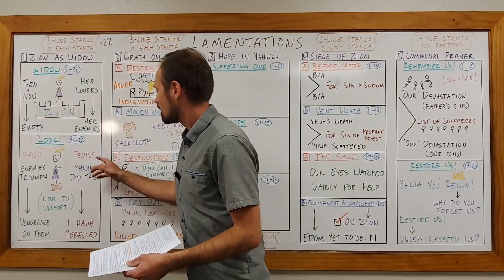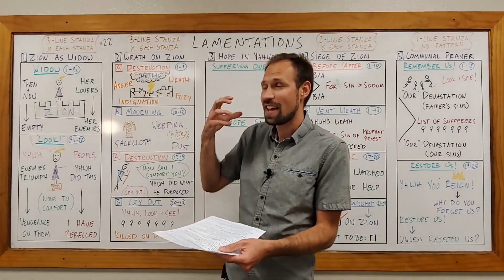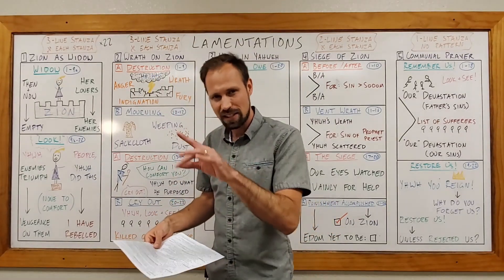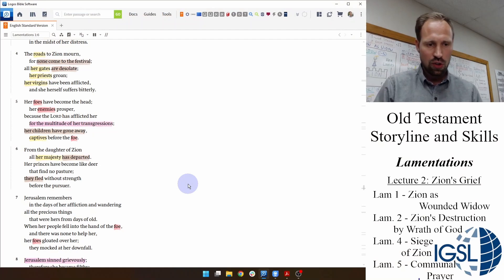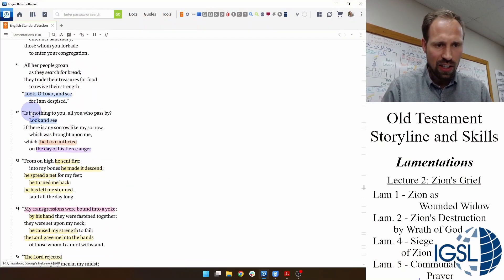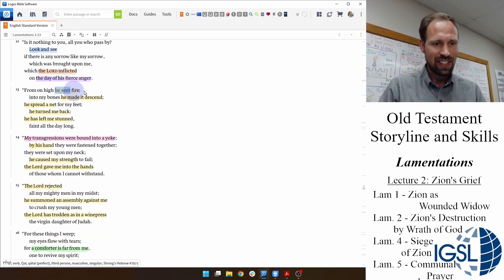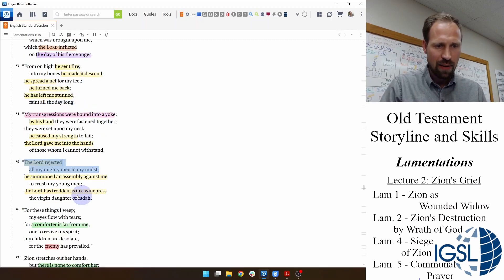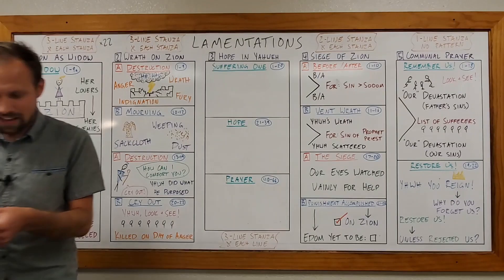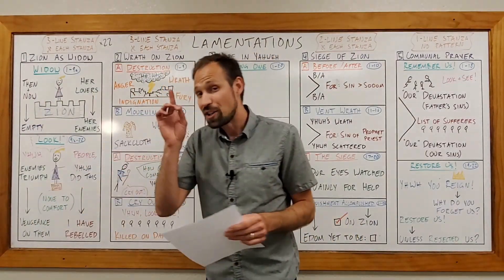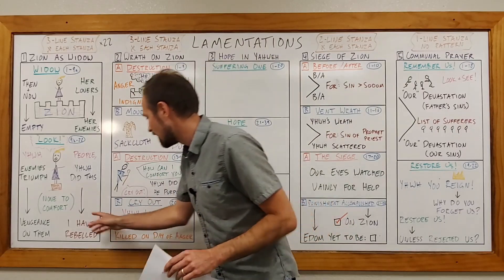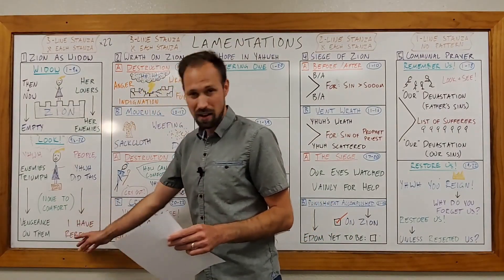And then she turns to whoever will listen to her and says, look, O people, Yahweh is the one who did this to me. It is his hand that is against me in judgment. And let's see that in chapter 1, verse 12. Look and see, all you who pass by, Yahweh inflicted me on the day of his anger. He set a fire among me. He made it descend into my bones. He spread a net. He turned me back and left me stunned. He rejected all my mighty men. He trod me as in a winepress. So, Lady Zion clearly acknowledges that God is the one who did this. But she also admits that I deserved it. It is my fault, for I have rebelled, she says.